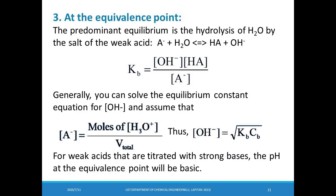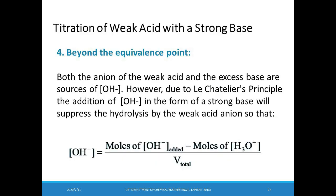At the equivalence point, all of the weak acid is neutralized and converted to its conjugate base. The pH does not equal 7 — it is slightly basic due to the conjugate base produced. Beyond the equivalence point, excess species are hydroxide ions. Calculate the hydroxide ion concentration by subtracting the original moles of weak acid from the moles of added base, dividing by total volume. Then use the Kw expression to find the hydronium ion concentration and apply the pH equation.